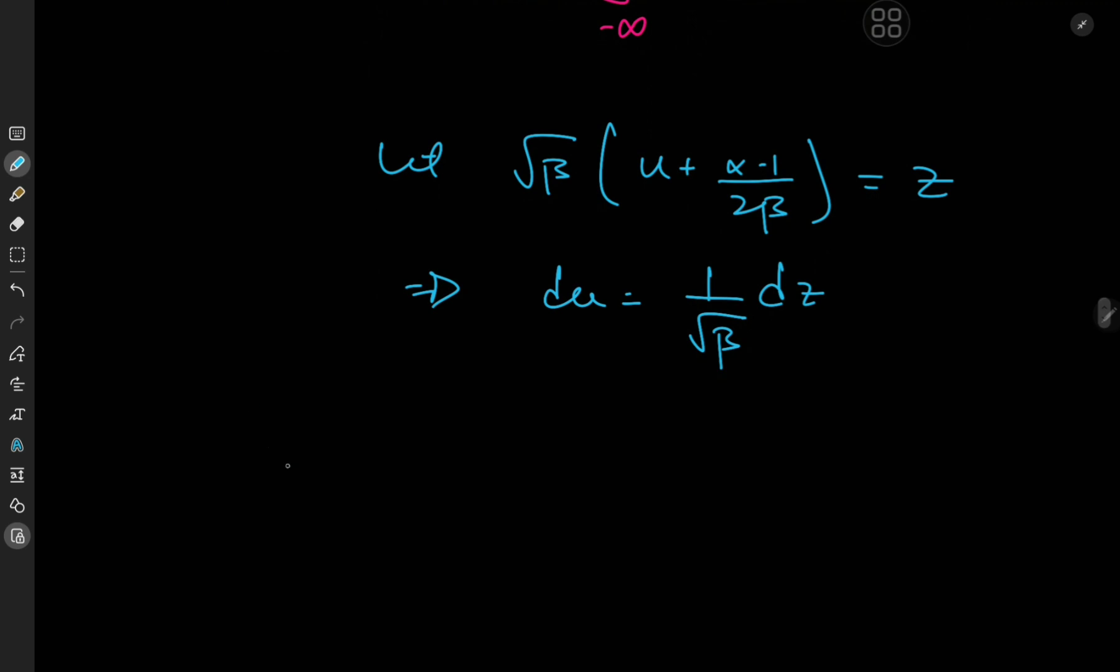And the limits of integration are clearly not bothered. We have u going to positive and negative infinity, so we have the same thing for z. So i here equals e to the negative alpha minus 1 squared divided by 4b. Why do I keep calling this b? It's beta. And I keep calling alpha alpha, but why am I calling this b? I really am tired today. Wow.